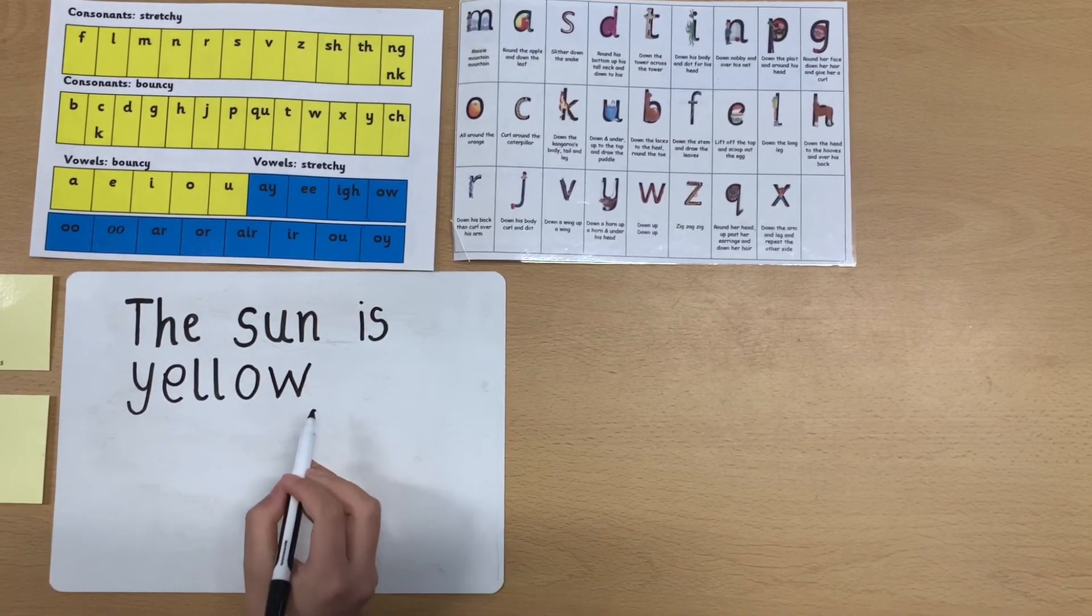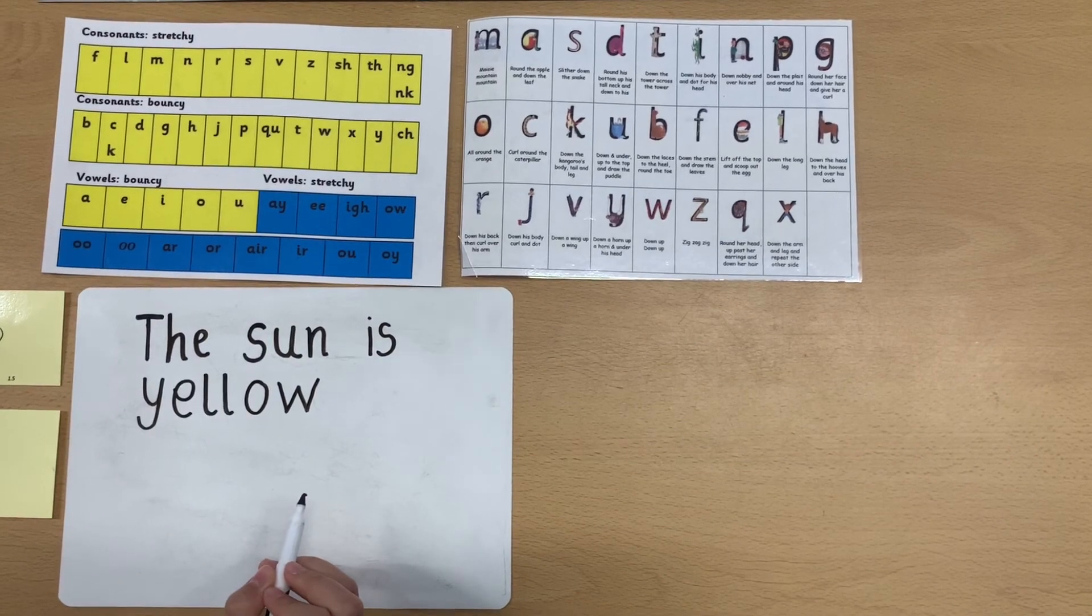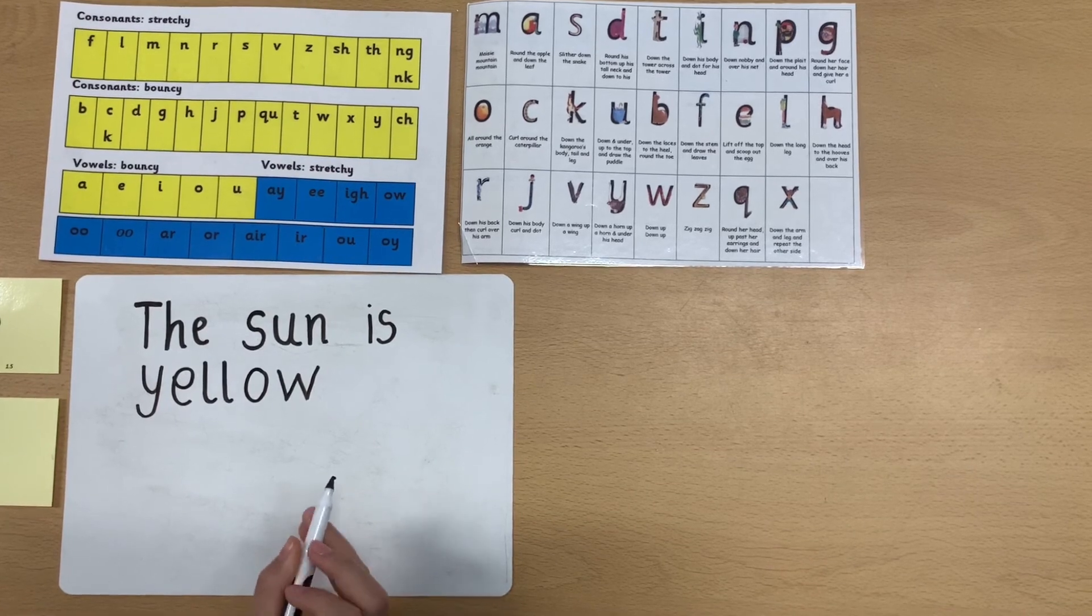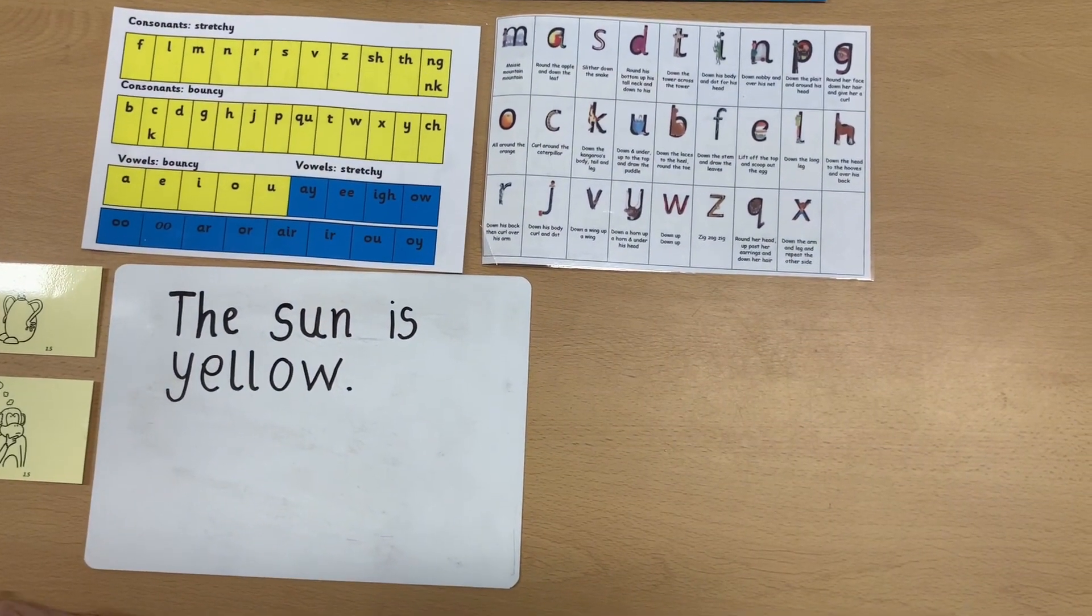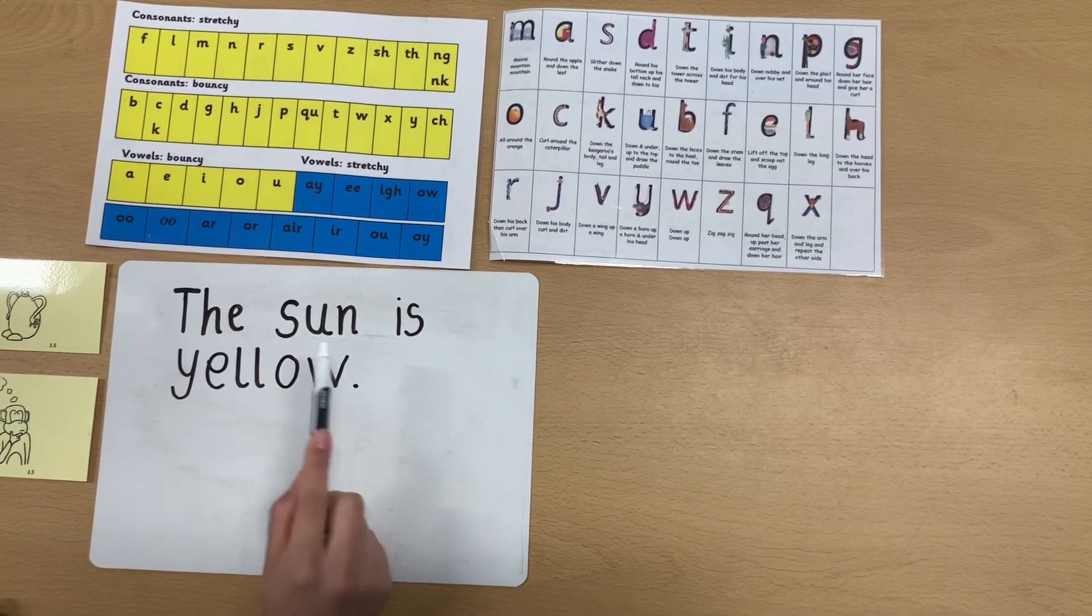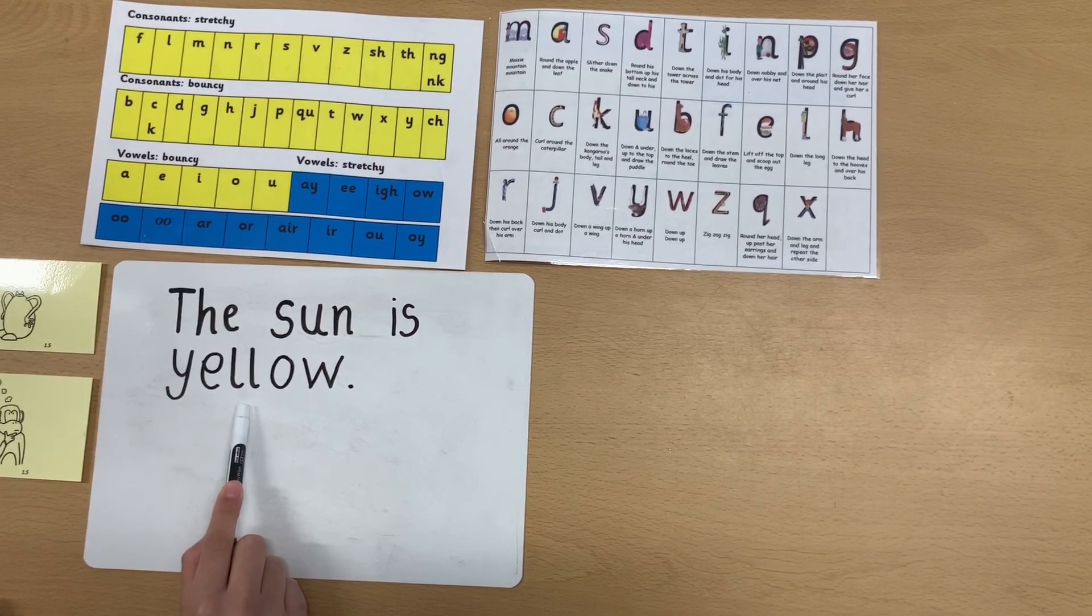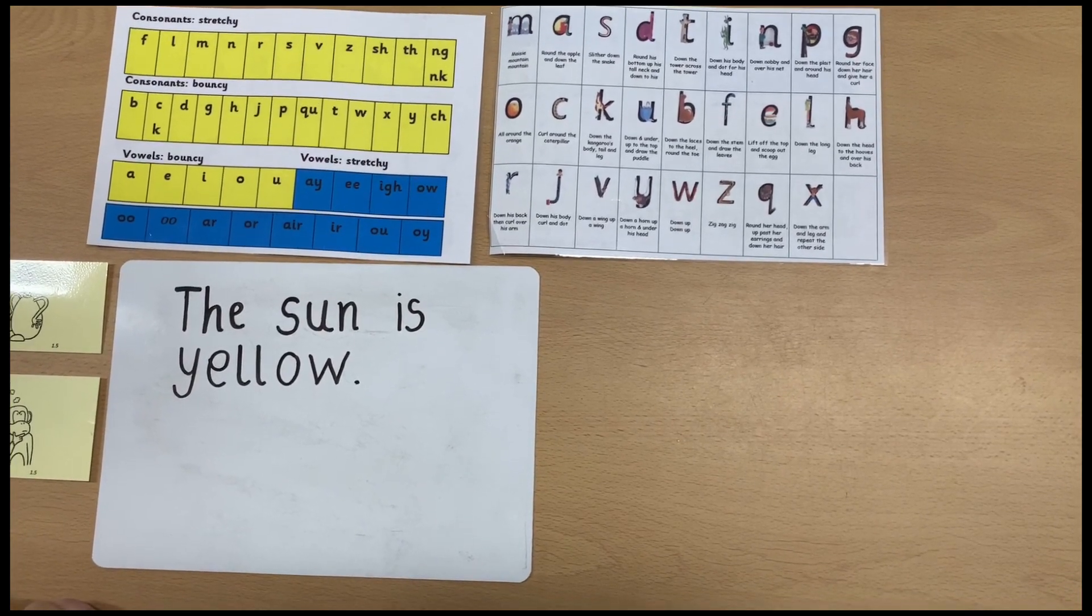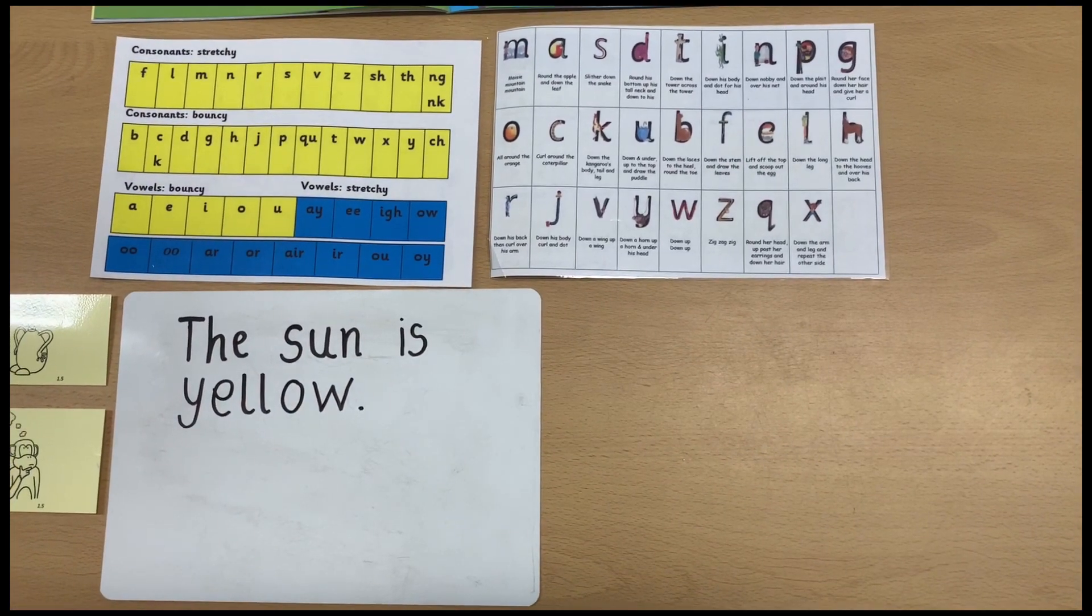What comes at the end of our sentence? Fantastic, it is a full stop. Let's read our sentence together. The sun is yellow. Can you practice writing this sentence at home? And if you could please take a picture and send it on Evidence Me. Thank you, bye.